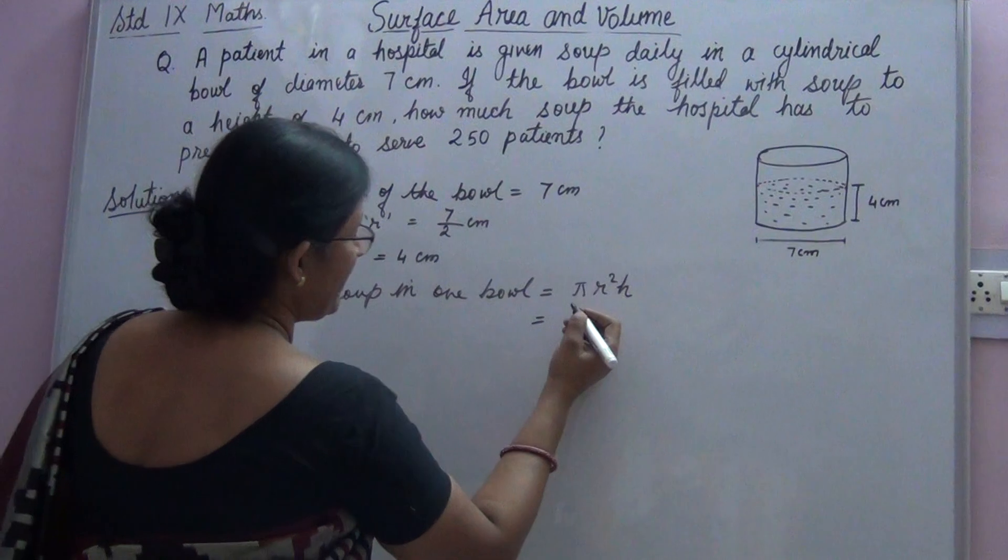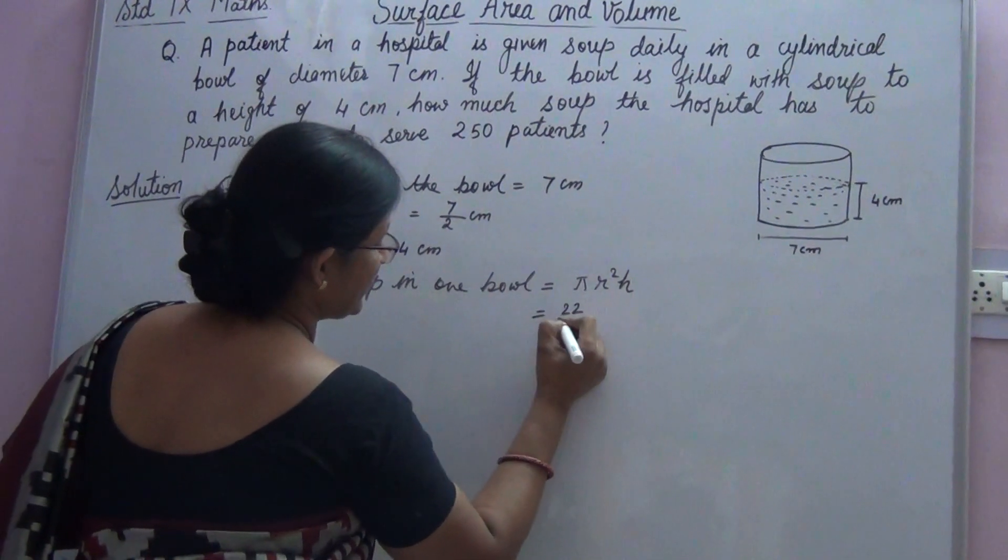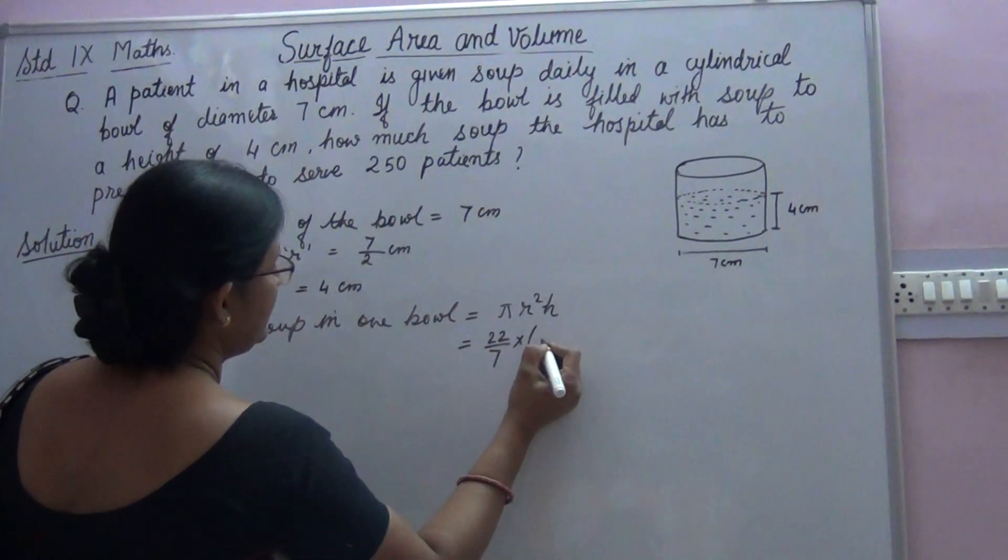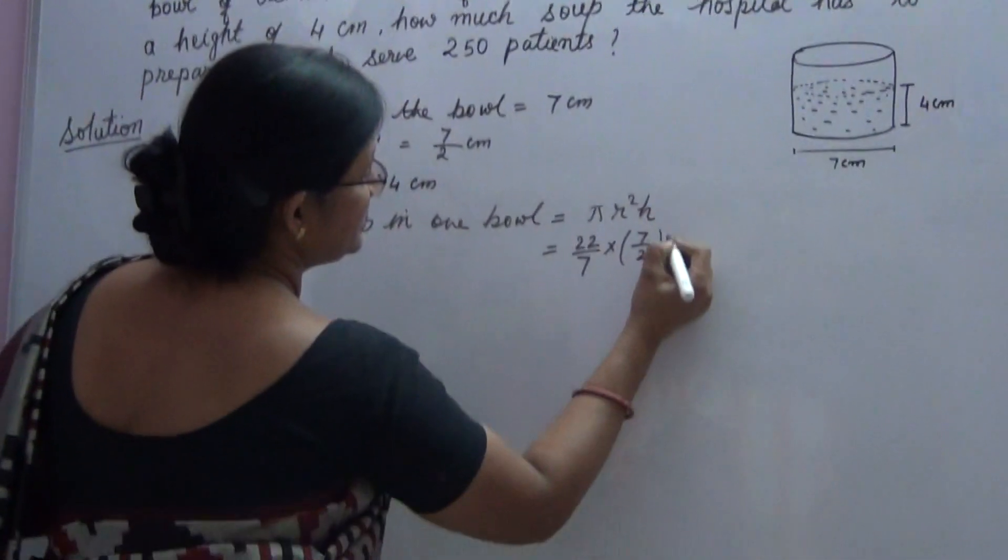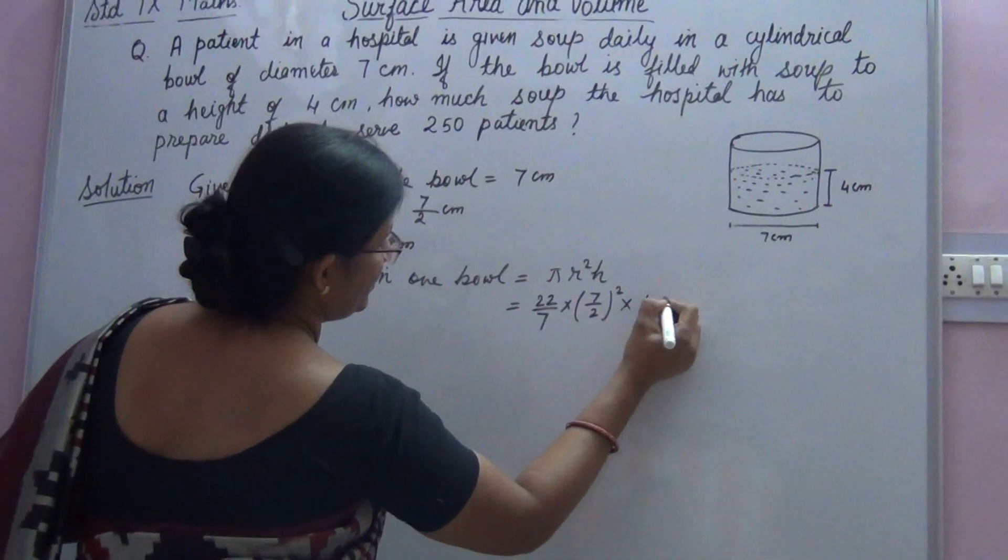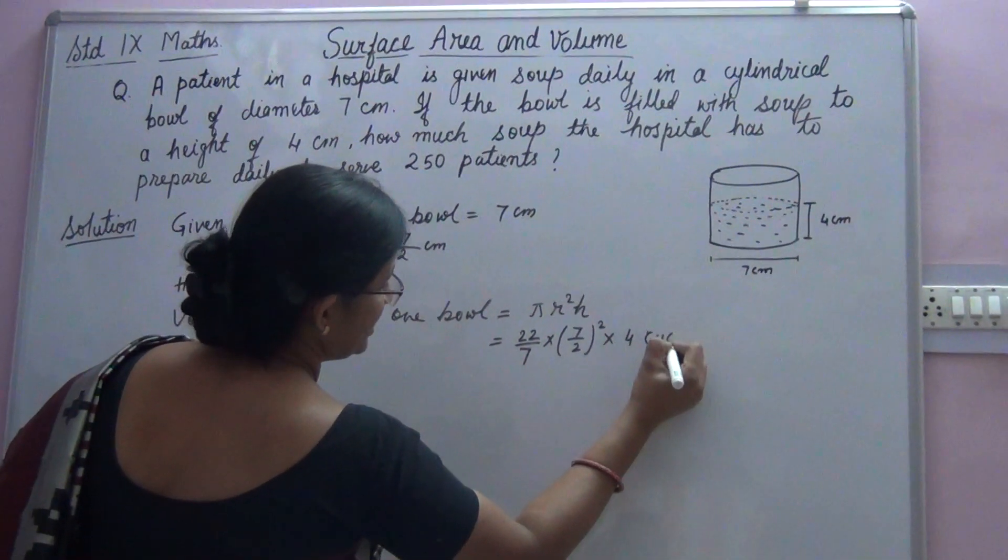The value of pi, as it is not given in the question, we can take 22 upon 7. R is 7 upon 2 cm, we need to put square, and h is 4 cubic cm.